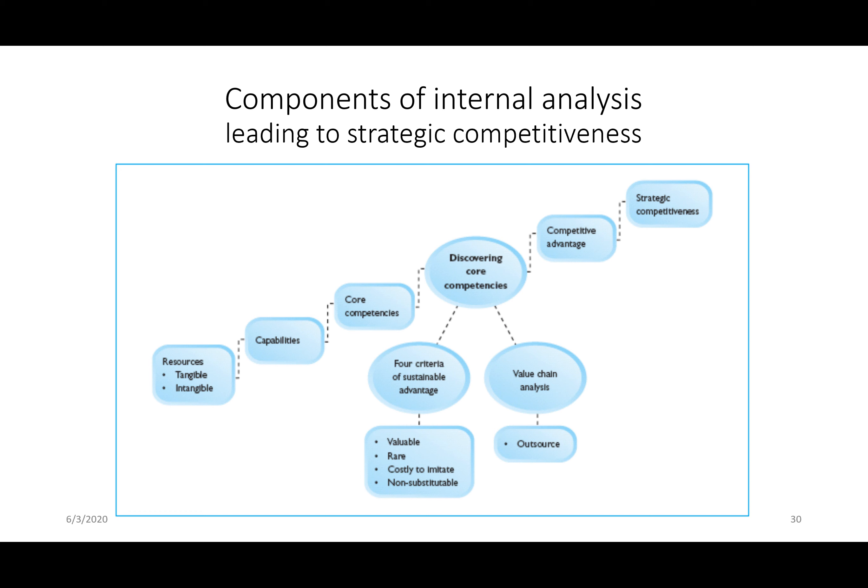A core competency is something you do well that gives you an advantage over other companies. The four criteria for a core competency are that it must be valuable — something valued by the customer — rare, meaning it can't be gotten elsewhere, costly to imitate, and non-substitutable. If you have all four, that can lead to sustainable competitive advantage. You identify your core competency through value chain analysis. The primary and supporting activities and how they are combined leads to a core competency. There is more than one pathway within the value chain, and we talked about outsourcing as accessing other people's value chains.